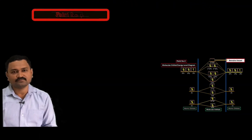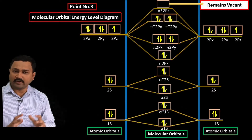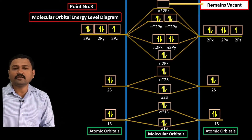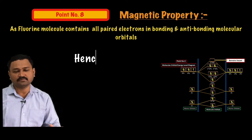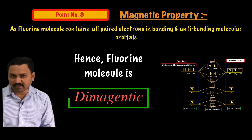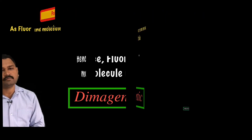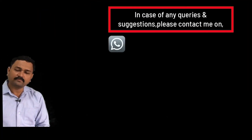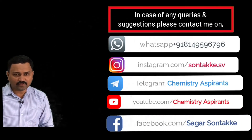Point number eight: magnetic property. All electrons in the bonding and antibonding molecular orbitals of fluorine are paired electrons, hence the fluorine molecule is diamagnetic in nature. These are the eight simple points by which you can easily explain the formation of the fluorine molecule. Thank you so much for watching — see you in the next video.